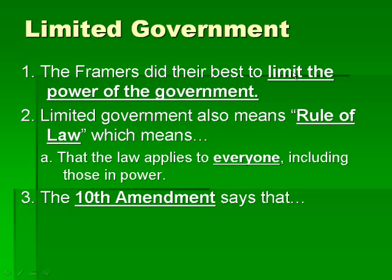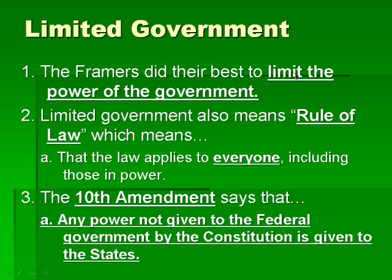The 10th Amendment is another way the government is limited in the Constitution. It says that any power not given to the federal government by the Constitution is given to the states. If a power is not listed or mentioned in the Constitution, the states have control over it. For example, there's no mention of speed limits on the interstates in the Constitution, so the states are responsible for regulating speed limits. Here in Missouri on the interstates it's 70 miles an hour, but in Illinois it's 65 — it varies from state to state. It's not a national law.